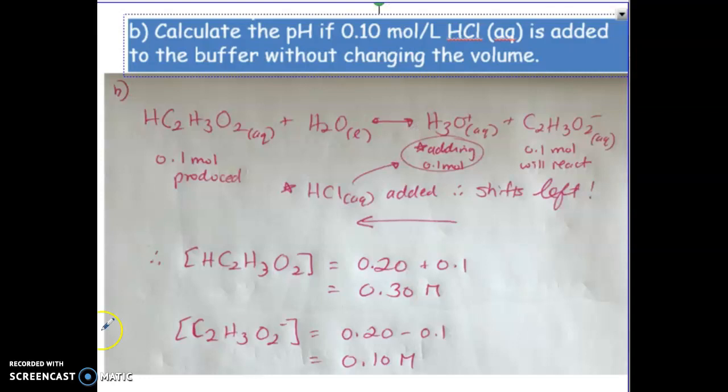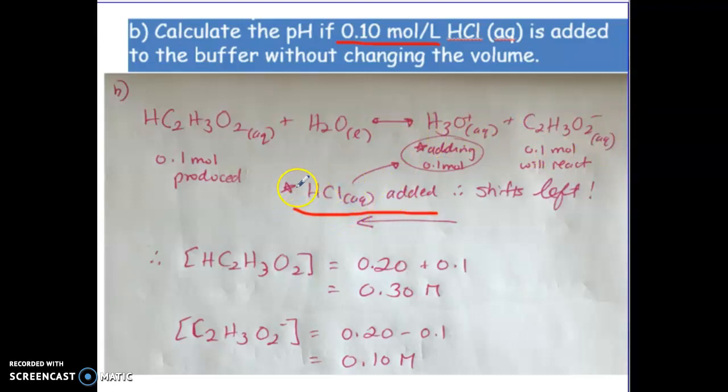So part b: calculate the pH if 0.10 moles per liter is added to the buffer without changing the volume. So essentially we are assuming we still have a one liter solution, so it would be as if we were adding 0.1 moles of hydrochloric acid. So here's our equilibrium again. So what you have to think about is when they mention they are adding in hydrochloric acid, that's essentially saying they're adding in straight up hydronium ions.